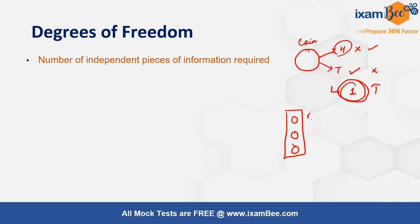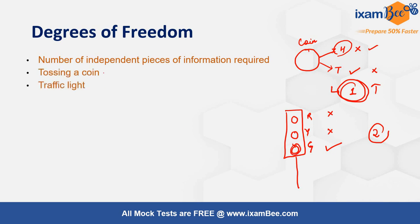Similarly, suppose there is a traffic light with three signals: red, yellow, and green. If I ask you what color it is and you say it's definitely not yellow, and then you say it's definitely not red, then I know the color must be green. Two pieces of information were required to determine the answer, so the degrees of freedom here is two — because knowing two colors automatically tells you the third.